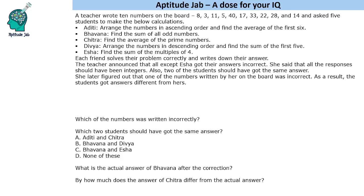Hello everyone, welcome to Aptitude Jab. This is a number-based puzzle. It says that a teacher wrote 10 numbers on the board. These are the numbers, and she asked five students to make the below calculations. These are the calculations given for five people A, B, C, D, E.